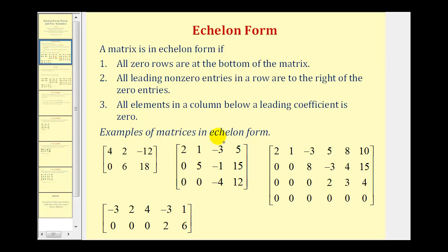Here are four examples of matrices in echelon form, and let's see why. A matrix is in echelon form if three conditions have been met. First, all zero rows are at the bottom of the matrix. This matrix here is the only matrix that has a zero row, and notice how it must be at the bottom.